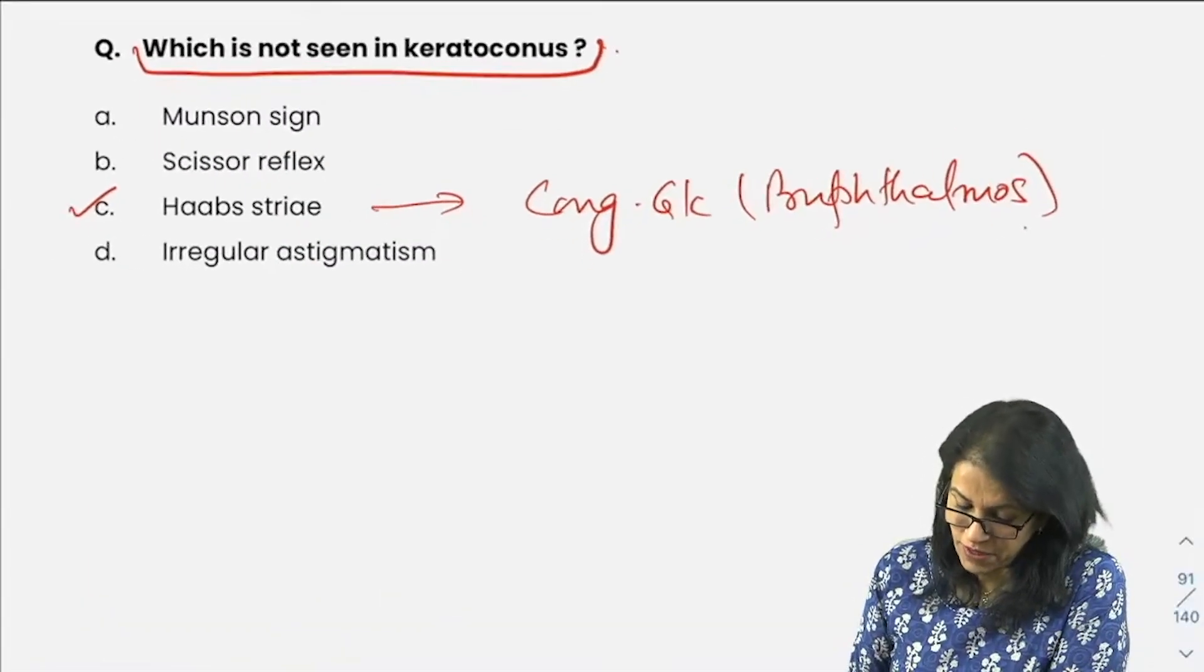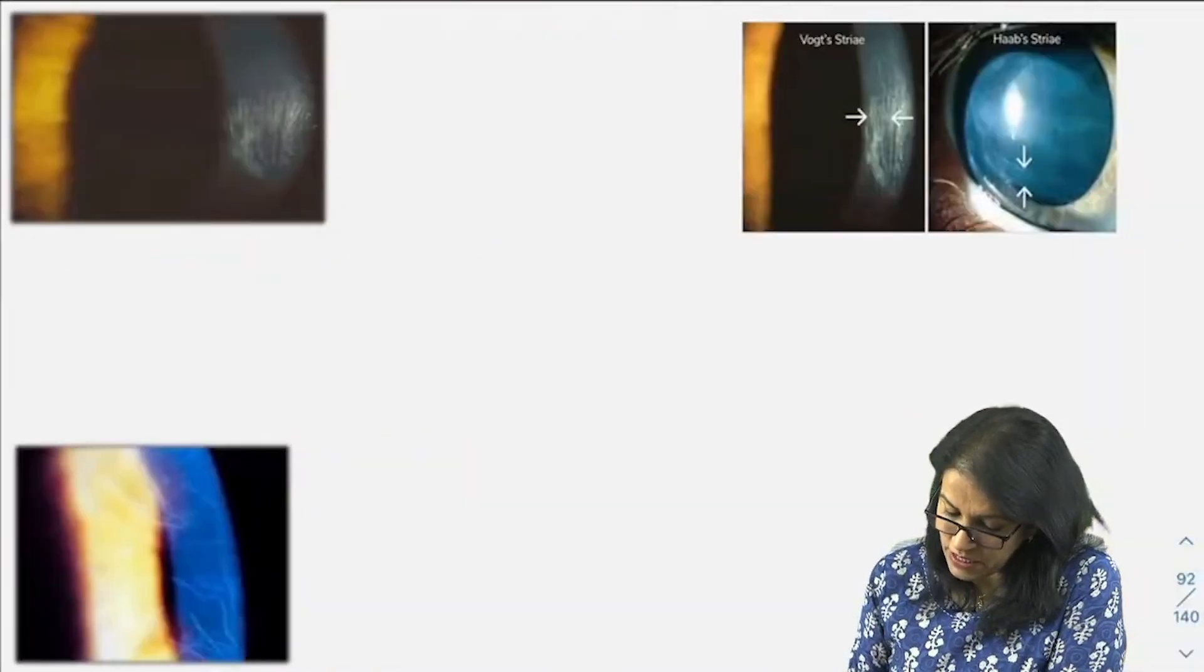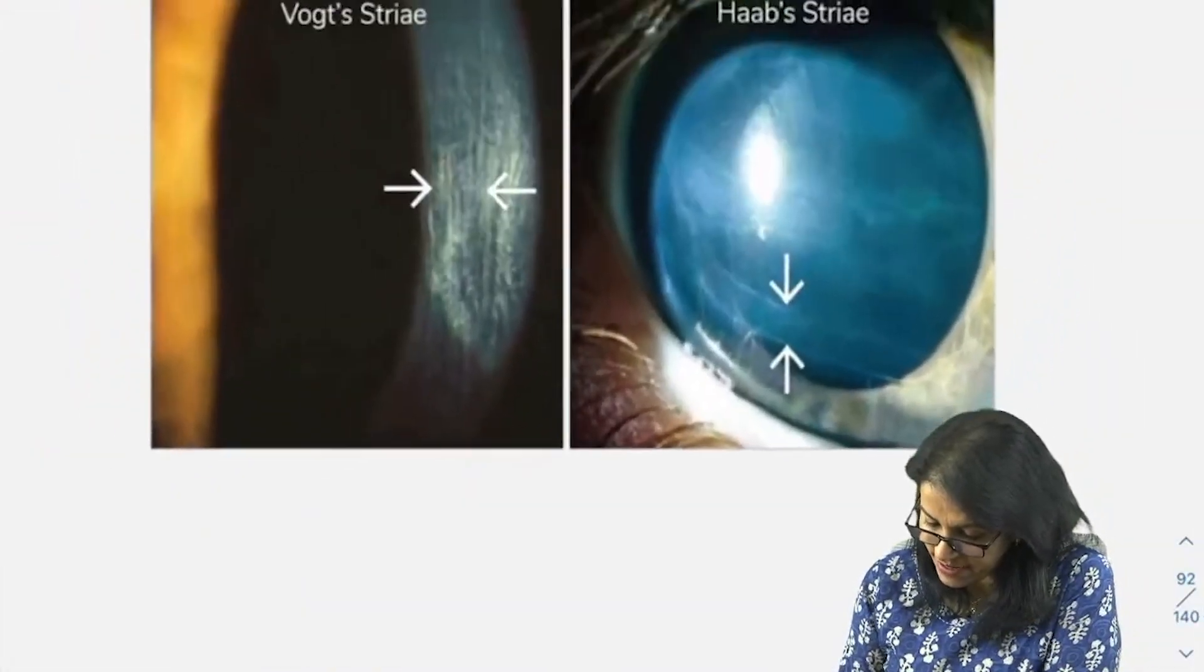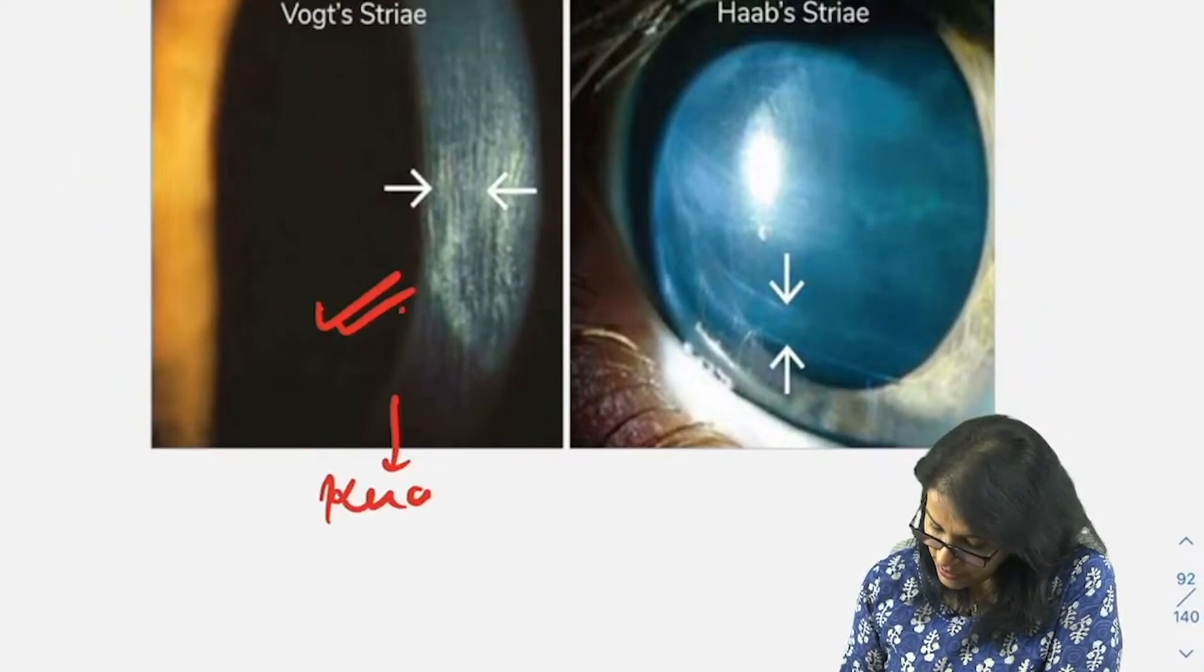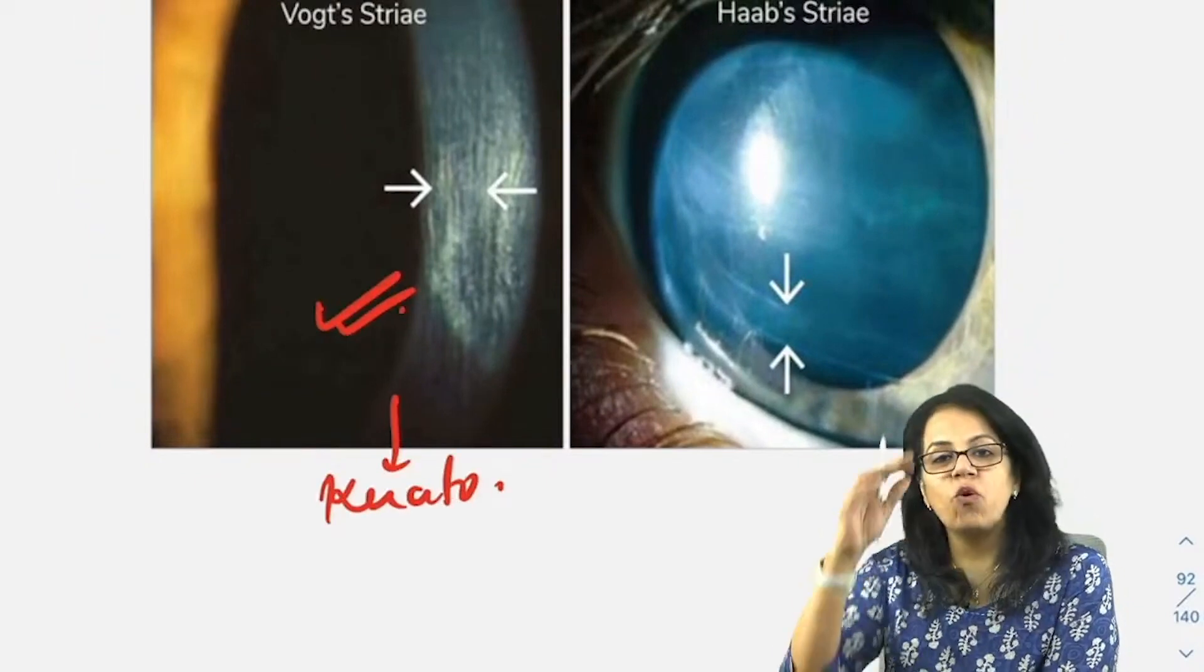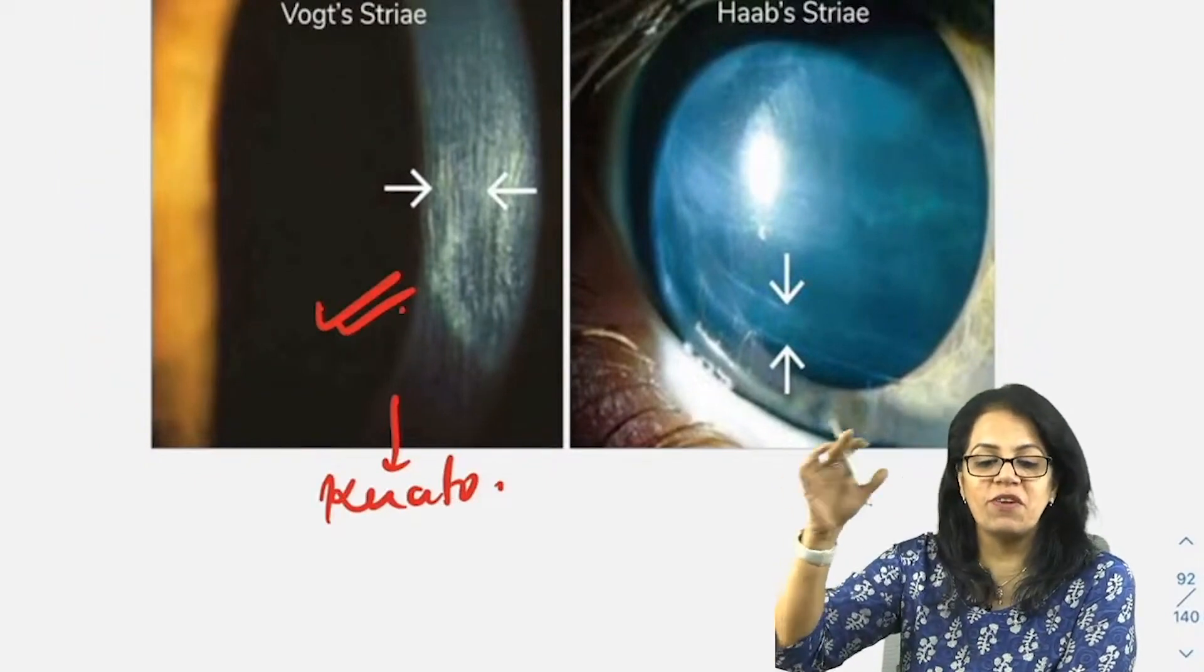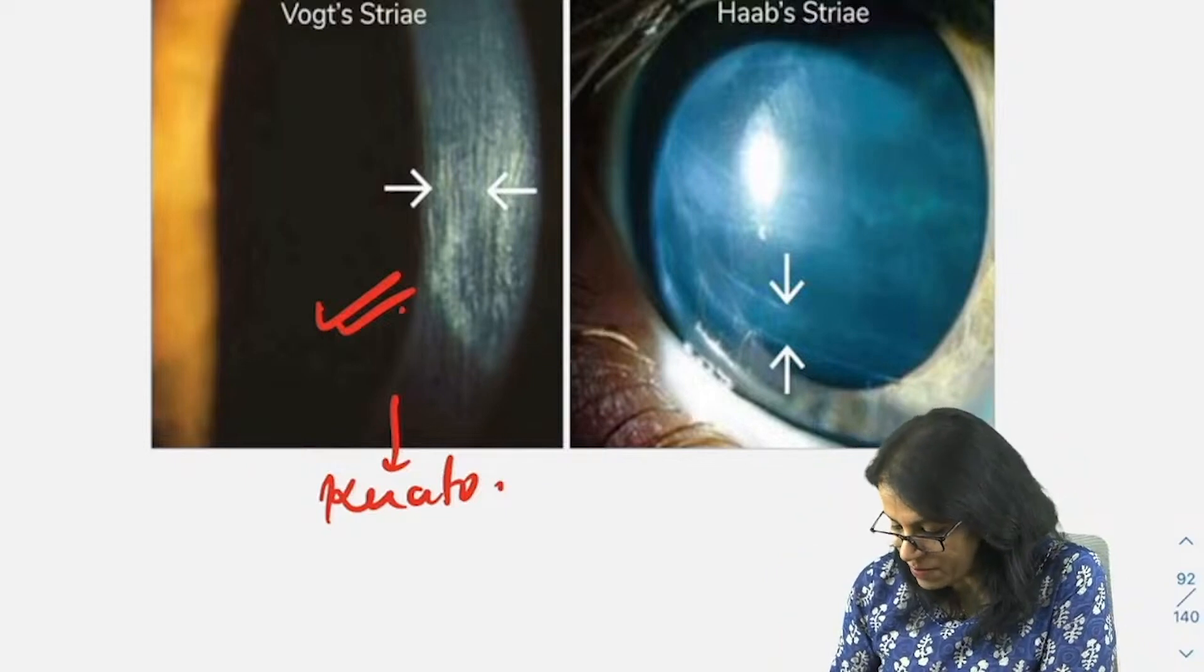We know what you see in keratoconus is Vogt's striae. Here you are, this is the Vogt's striae. This is the feature of keratoconus. Very easy: Vogt's is parallel to the steep axis. Vogt's vertical and Haab's horizontal.